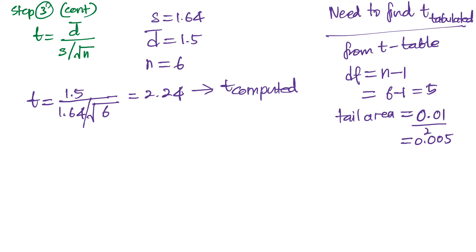And also the tail area - we know that the alpha is equal to 0.01, so since 0.01 represents a tail area of both sides, so we have to find only one side which is 0.005. So based on these two information we can get the t value from the table as 4.032.